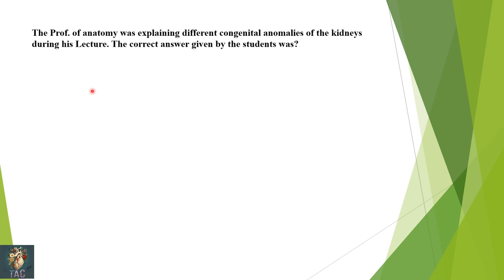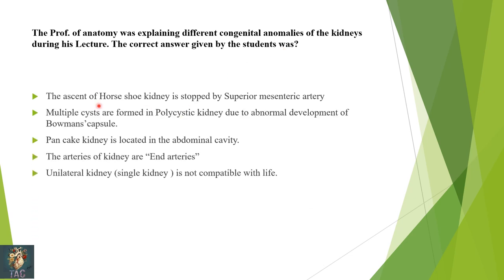A professor of anatomy was explaining congenital anomalies of the kidney. The correct student answer was D. The ascent of the horseshoe kidney is stopped by the inferior mesenteric artery, not the superior mesenteric. Multiple cysts in polycystic kidney are not due to abnormal Bowman's capsule development. Pancake kidney is a fused kidney in the lower lumbar region. The arteries of the kidney are end arteries — this is correct. A single unilateral kidney is compatible with life, so that option is incorrect.